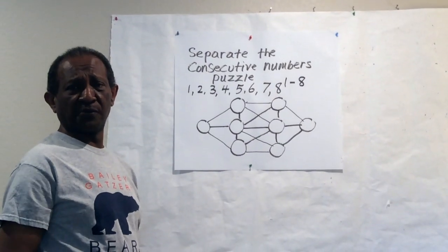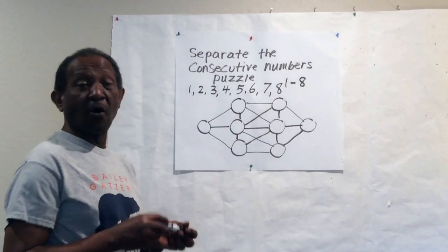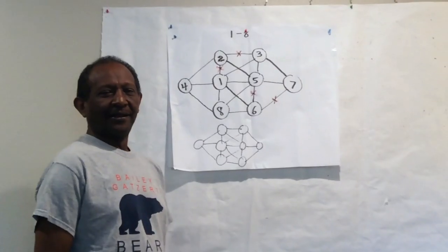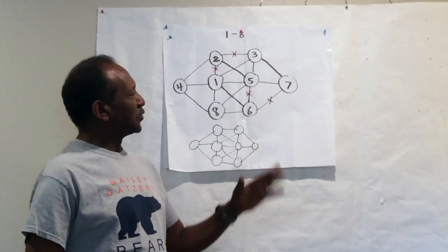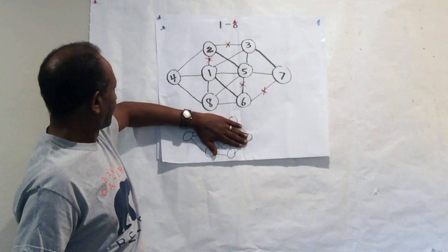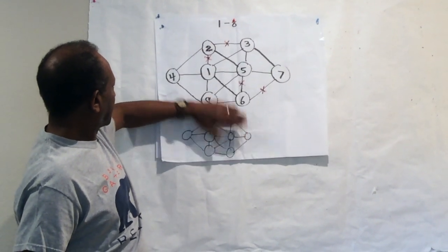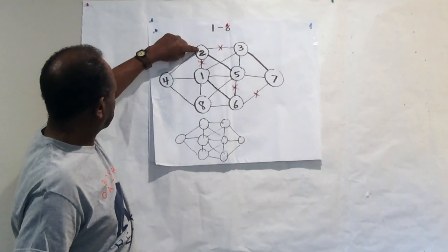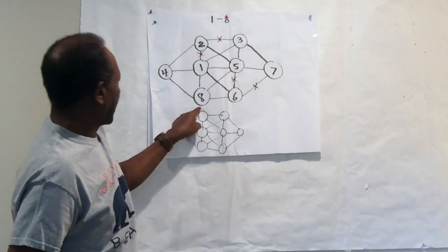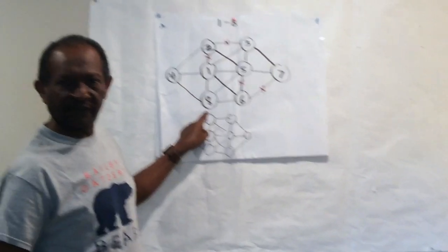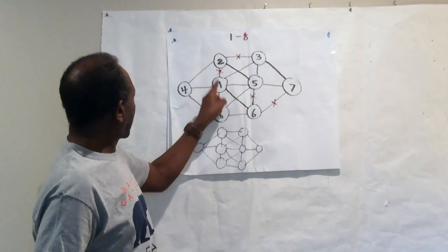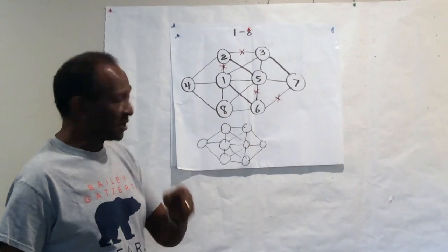Now I'm going to show you a completed work. Let's look at this student's work. This student put all the numbers one, two, three, four, five, six, seven, eight — that's perfect. Each number is written once — that's also good.